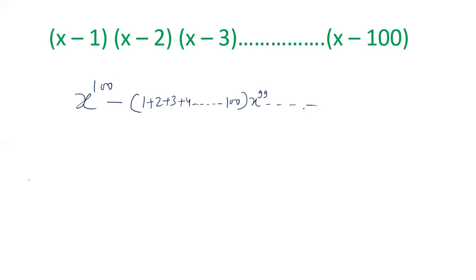And we are not concerned with the remaining terms. We have to find out the coefficient of x power 99 and the coefficient of x power 99 is 1 plus 2 plus 3 plus 4 up to 100.